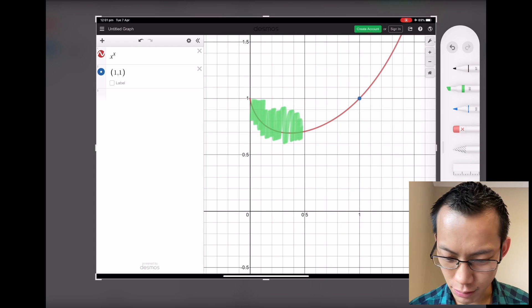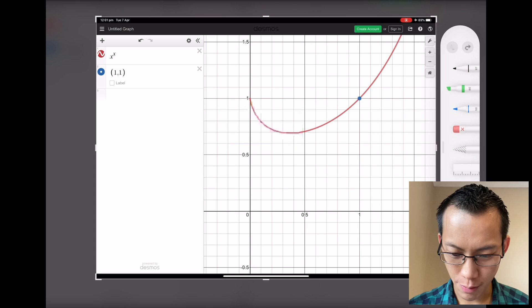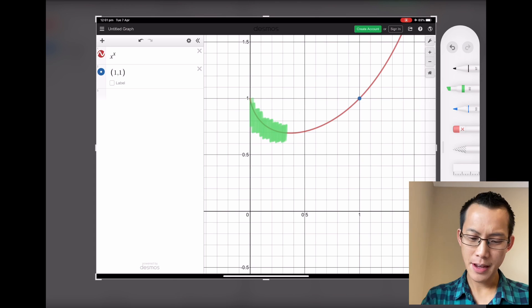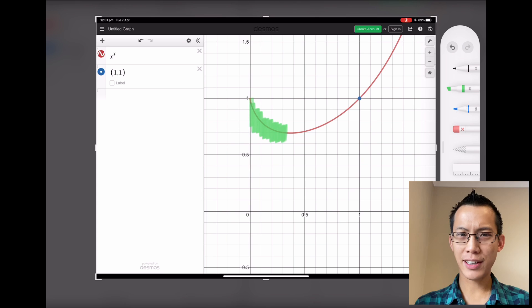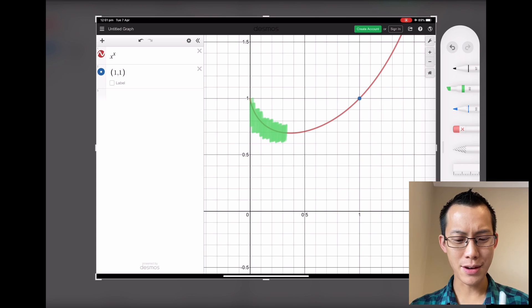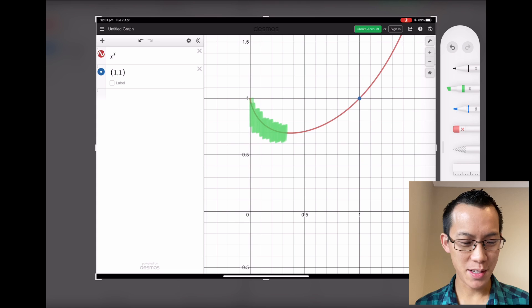If we have a look at this part of the function over here, this part of the function is clearly decreasing—it's going down—so its derivative or its gradient function should be negative at that point. But we can see, we're looking at x^x right now, it's never negative. So this is a bust, this is no good.